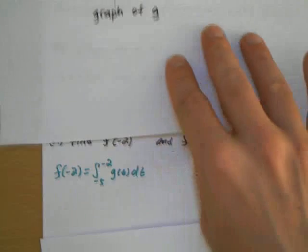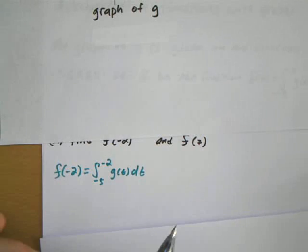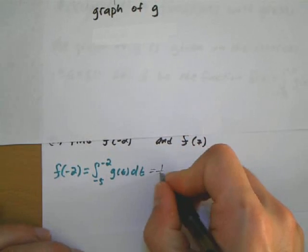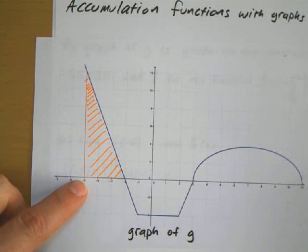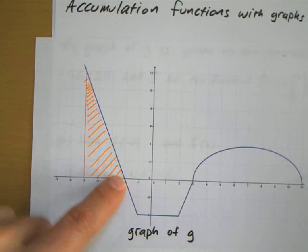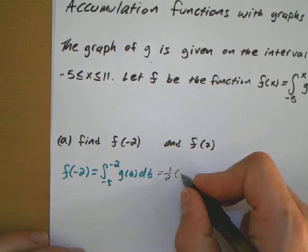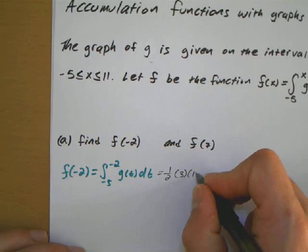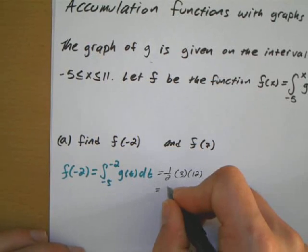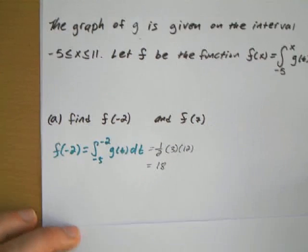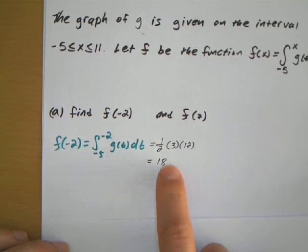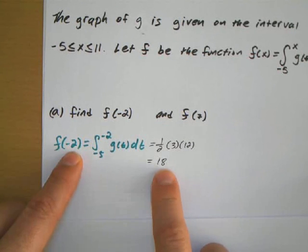I can just find the area of that triangle, which is going to be equal to 1 half. The base of this triangle is 3, and the height is 12. So it's 1 half times 3 times 12, which gives me 18. And that's f of negative 2.